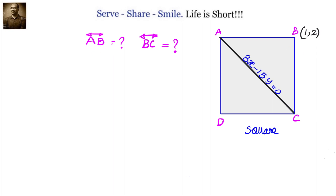We have a vertex B with coordinates that is not part of the diagonal AC. Given the equation of one diagonal and the vertex, we have to find out the equations of AB and BC — the sides which have vertex B at (1, 2). We know that the diagonal divides the square into two equal parts and makes an angle of 45 degrees with the sides of the square.